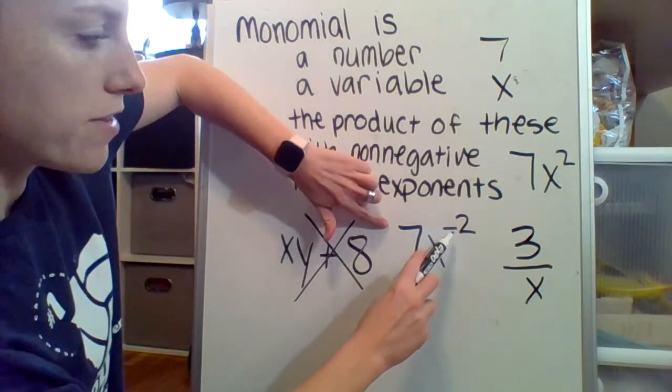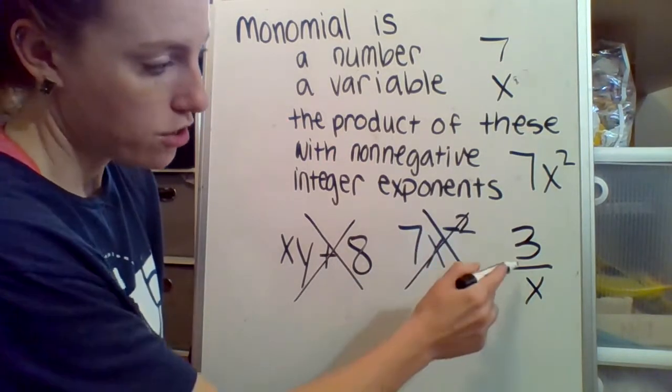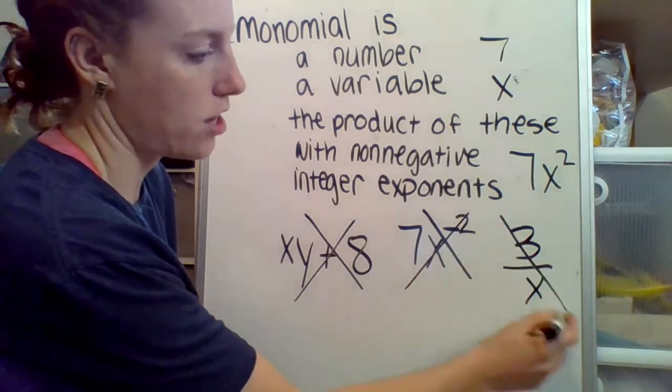7x to the power of negative 2. That is not a monomial because this is negative. 3 divided by x. That is not a monomial.